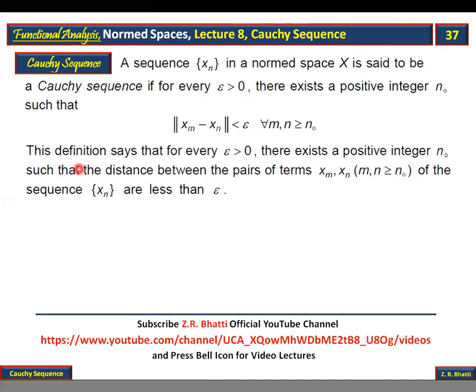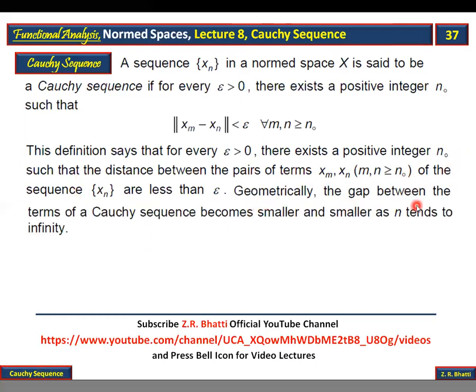This definition says that for every epsilon greater than zero, there exists a positive integer n₀ such that the distance between the pairs of terms xm, xn (m,n ≥ n₀) is less than epsilon. Geometrically, the gap between the terms of a Cauchy sequence becomes smaller and smaller as n tends to infinity.